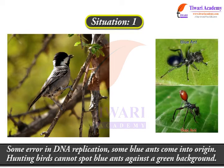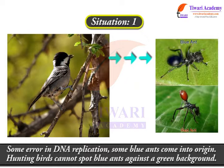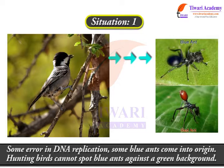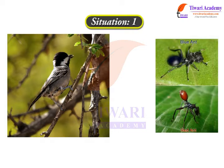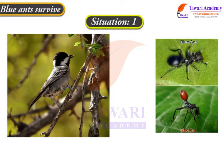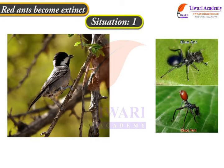Because of some error in DNA replication, some blue ants come into origin. Hunting birds cannot spot blue ants against a green background. As a result, blue ants survive and red ants become extinct over a period of time.